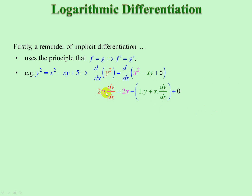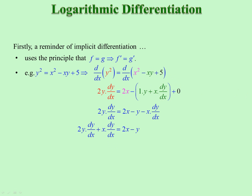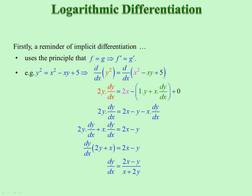Derivative of the outside, derivative of the inside. x squared gives 2x. Product rule: 1 times y plus x times derivative of y, which is dy by dx, plus derivative of 5, which is 0. Take away the brackets and collect the dy by dx terms. Take out the factor and isolate dy by dx.